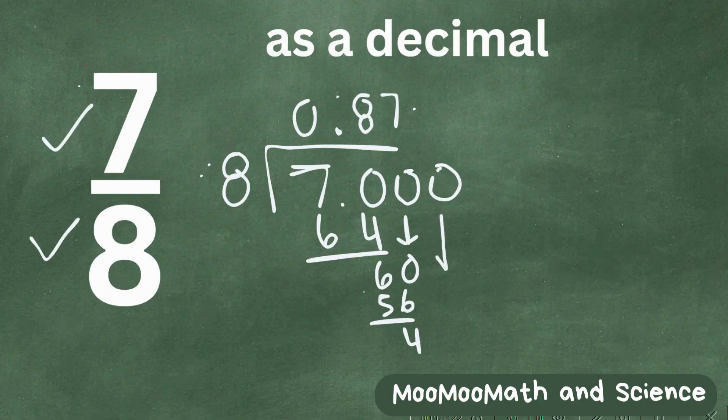Let's bring this next 0 down. 8 goes into 40. 5 times 5 times 8 is 40. Look at this, it gives us a 0. So we are finished.